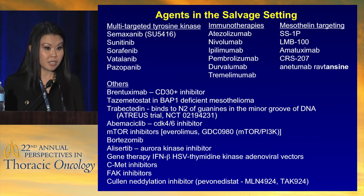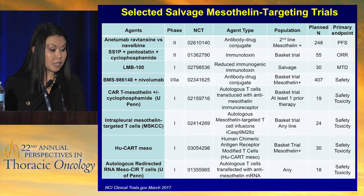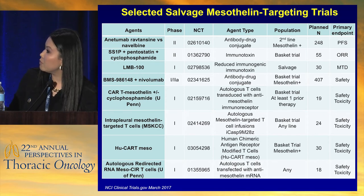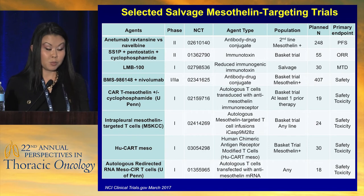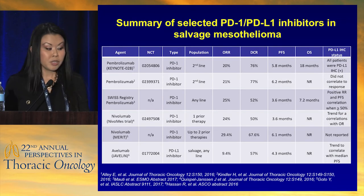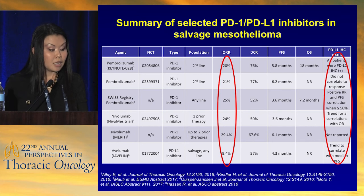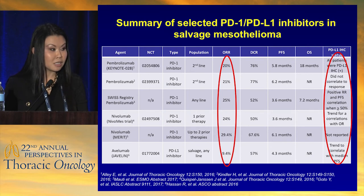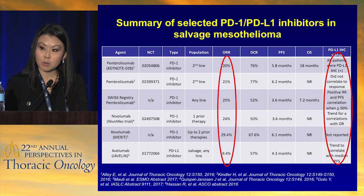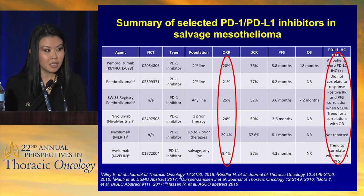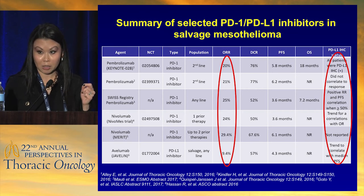There are many studies in the salvage setting looking at various agents, including mesothelin-targeted therapies. The anetumab ravtansine versus vinorelbine study, unfortunately, was a negative study — just presented at World Lung. Looking across all checkpoint inhibitors in the salvage setting, there is a consistent approximately 20% response rate. We don't yet have enough data to confirm correlation with PDL1, but the trend is there. Microbiome and tumor mutation burden will likely be important for identifying best responders to single-agent checkpoint inhibitors.